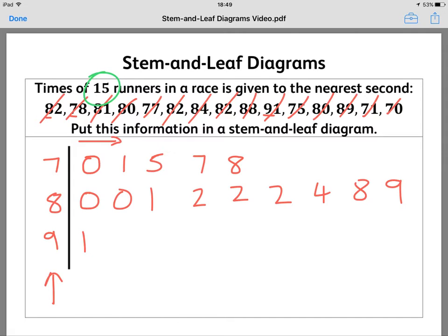So, from that, we haven't actually quite finished. First, the next thing we need to do is have a key, because at the moment, we don't know what these numbers in the stem and leaf mean. So, 7 slash 0 means 70. And that, if you had to draw a stem and leaf in an exam, that will give you full marks there.